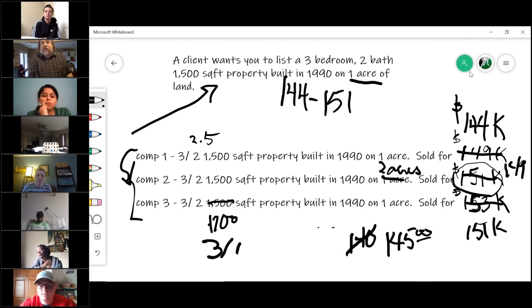So based on a three-one at $140,000, a three-two would be $145,000. So we would bring the comp up in that case because the comp is inferior to our property, as opposed to the others that were superior, so we had to lower their values. Right. That is the principle of substitution.